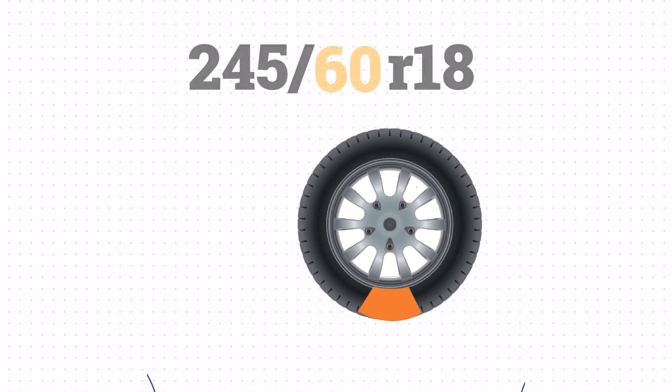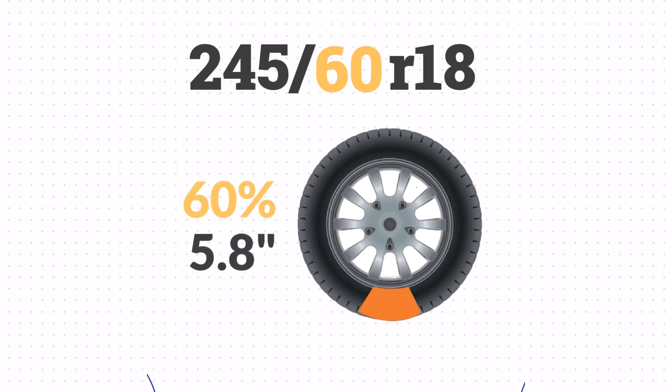Then we have the aspect ratio. This number represents the size of the sidewall compared to the section width. The 60 in this case means that the sidewall is 60% of the width, or 5.8 inches.